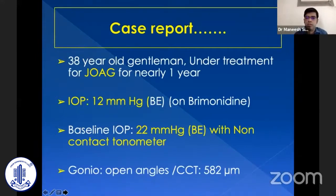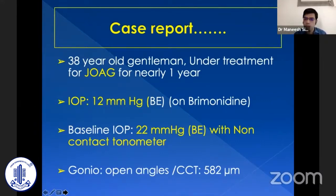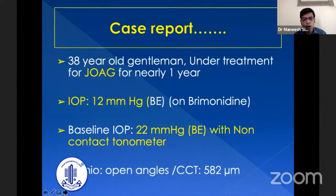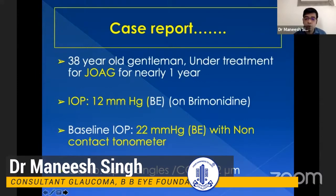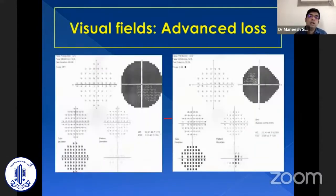We'll start with a case report. This is a 38-year-old gentleman who came for our opinion. This patient was already on brimonidine; the intraocular pressure was 12 mmHg in both eyes. The baseline pressure was 22 mmHg recorded with a non-contact tonometer. Angles were open on gonioscopy. CCT was high, so with this CCT, 22 was actually a normal intraocular pressure at baseline. But the patient has very advanced field loss in both eyes.